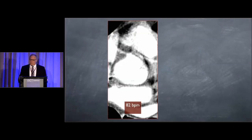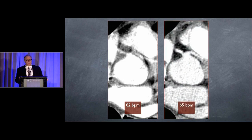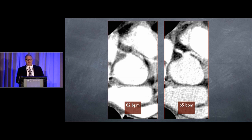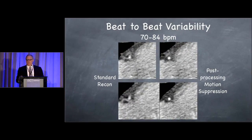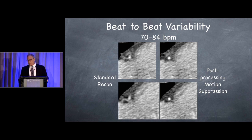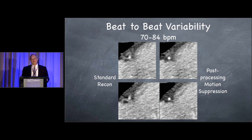Here's an example of a patient with a higher heart rate versus a patient with a lower heart rate. With a lower heart rate, given a fixed temporal resolution, we can see the anomalous origin of the left main coronary artery at 65 beats per minute, but at 82 it's just a big smudge. This is an example of the use of a post-processing algorithm to correct motion — the images of the right coronary artery demonstrate blurring, and the motion correction brings them into higher fidelity in a patient with a higher heart rate.